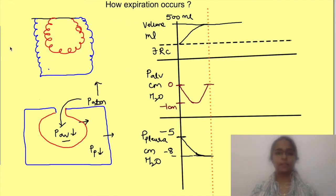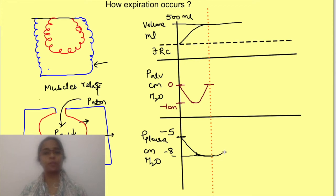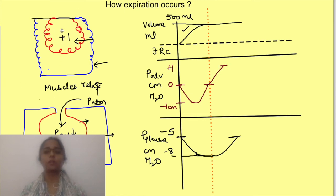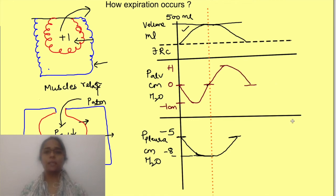For tidal expiration, the changes in thoracic cavity and lung volume caused during tidal inspiration are simply reversed. The diaphragm and external intercostal muscles relax, causing a decrease in thoracic cage volume and an increase in pleural pressure back to the resting minus 5 cm water, causing a decrease in lung volume. With the increased volume of air from inspiration, alveolar pressure rises to plus 1 cm water relative to atmospheric, causing exhalation of the same amount of air. At the end, alveolar and atmospheric pressure again become equal. Tidal expiration is therefore a passive process brought about by relaxation of the inspiratory muscles.